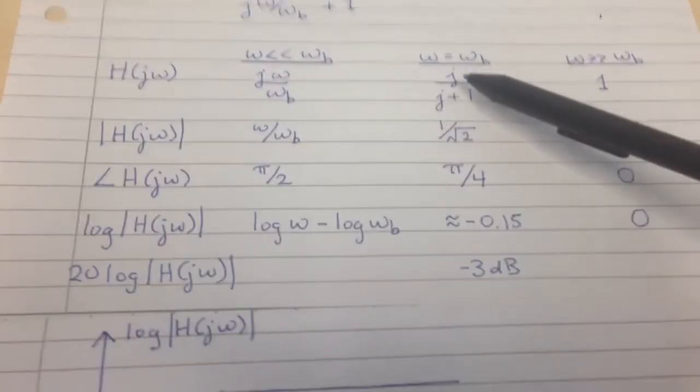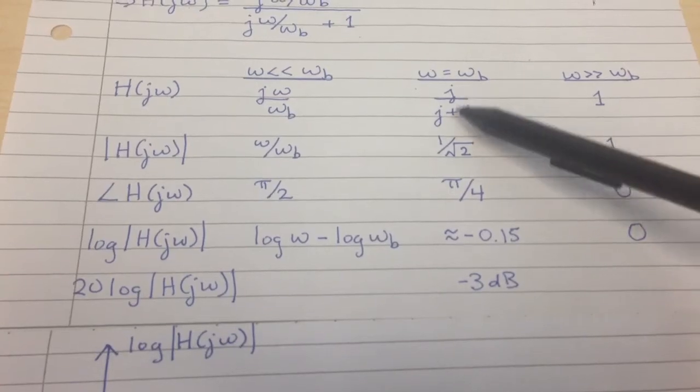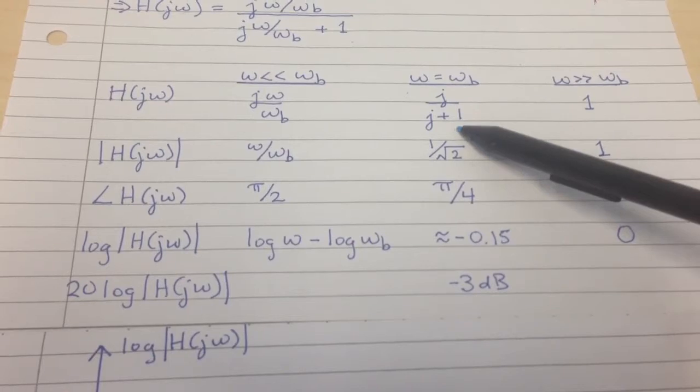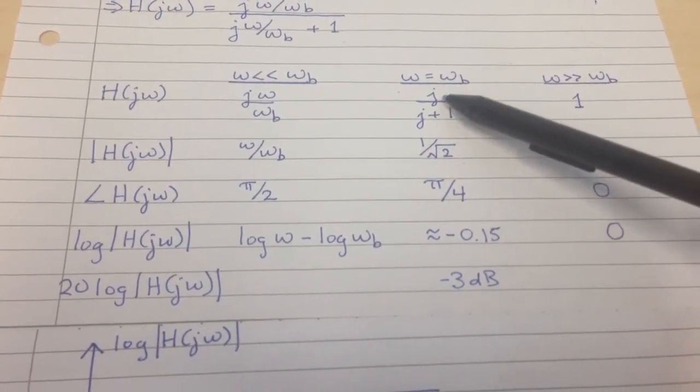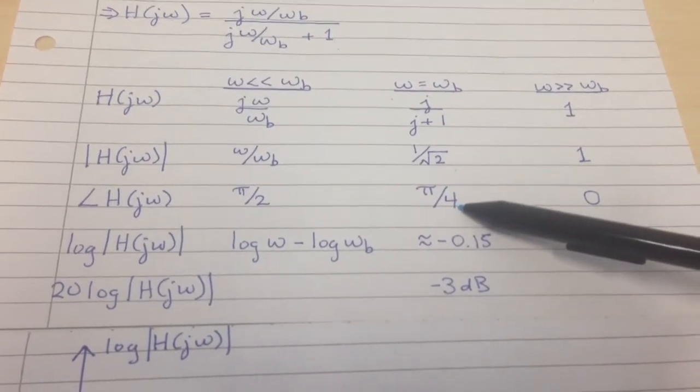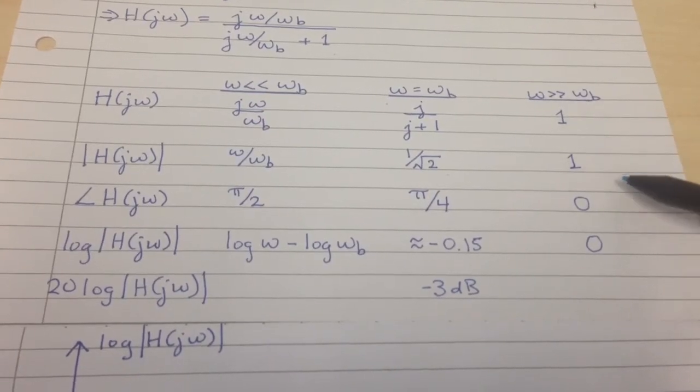This quotient is a little trickier to figure out. You get pi over 2 from the numerator and the denominator is a 45 degree triangle, so it has a phase of pi over 4. You have pi over 2 minus pi over 4, and you end up with a phase of pi over 4. And then finally, this is just on the real axis, so its phase is 0.